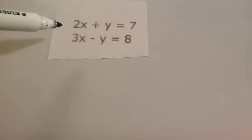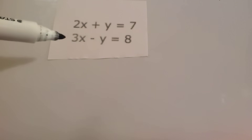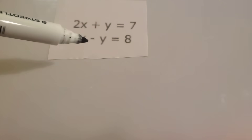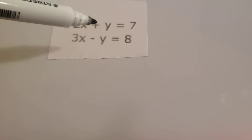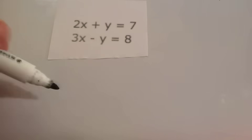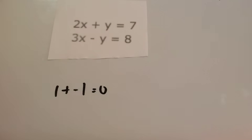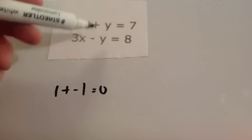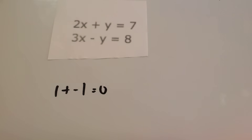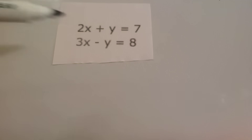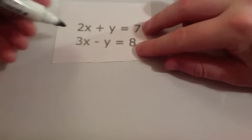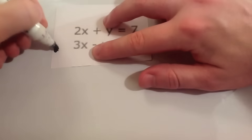In this next pair of simultaneous equations we've got 2x plus y equals 7 and 3x minus y equals 8. Notice we have y and minus y. If you add y and minus y together — like 1 plus minus 1 — you get zero. So adding these two equations together will eliminate the y's.